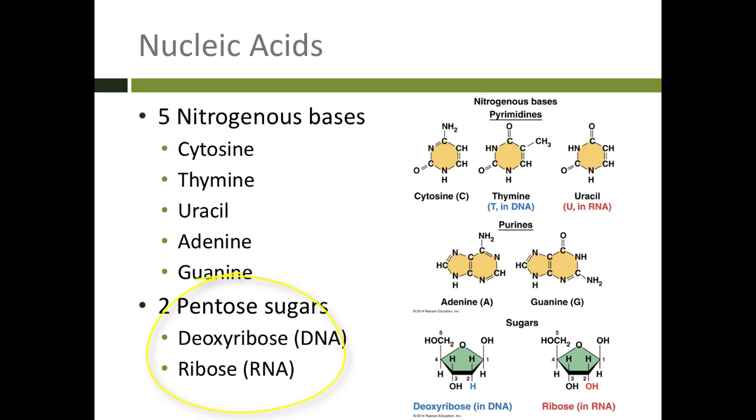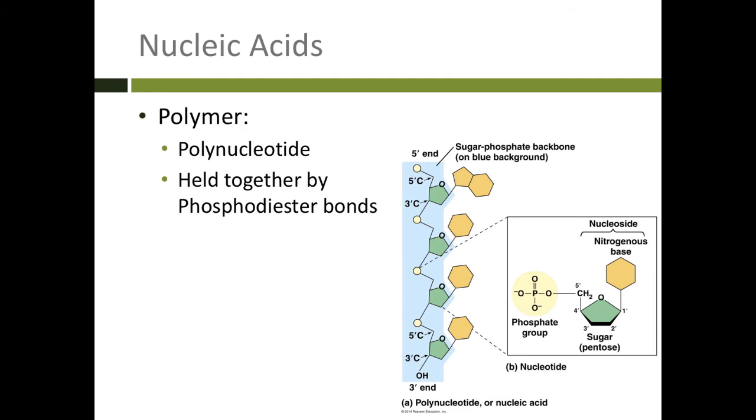There are two different types of pentose sugars. Deoxyribose is in DNA, and ribose is in RNA. You can see there's actually an oxygen missing from deoxyribose.